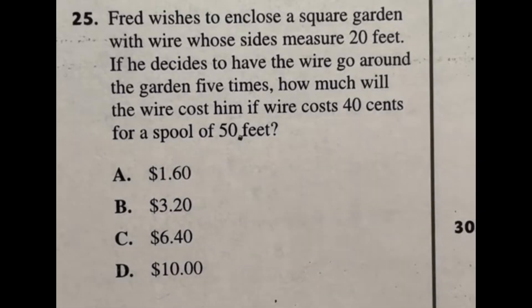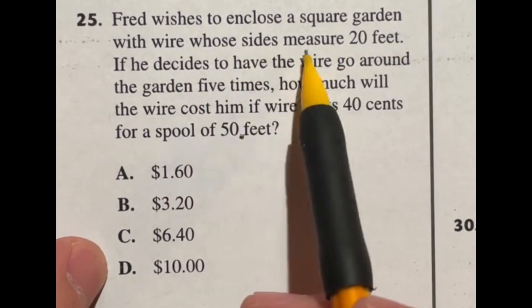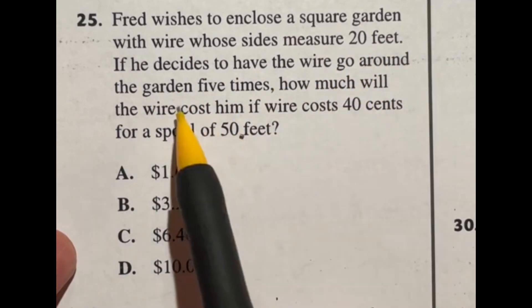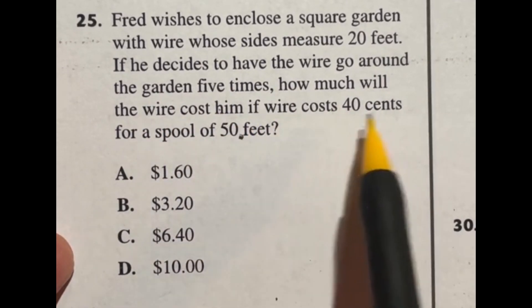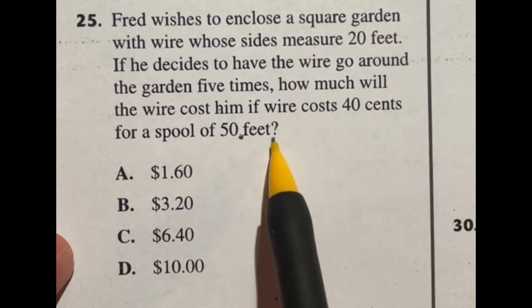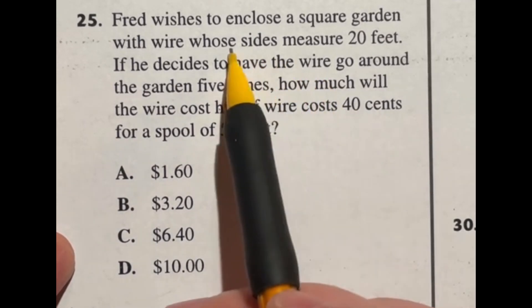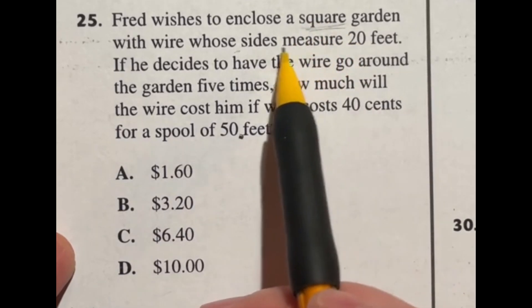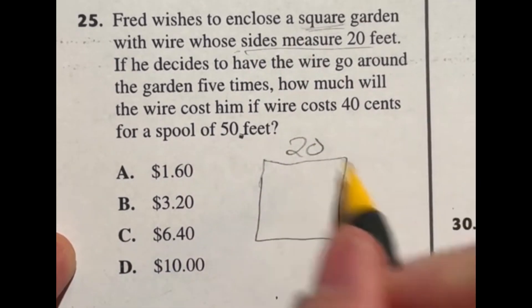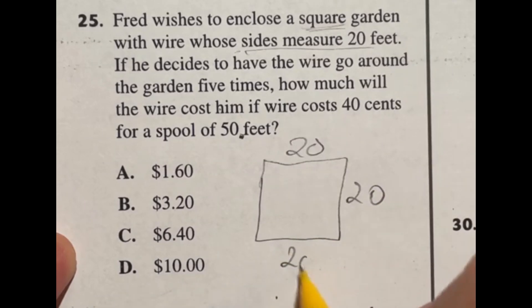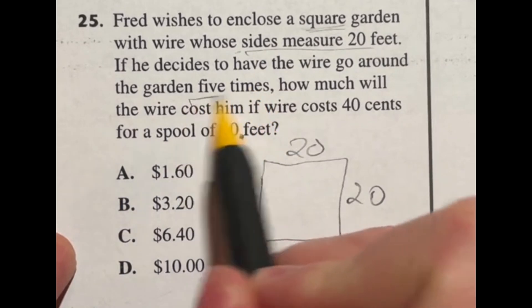Number 25 has quite a bit going on here. It says Fred wishes to enclose a square garden with wire whose sides measure 20 feet. If he decides to have the wire go around the garden five times, how much will the wire cost him if wire costs 40 cents for a spool of 50 feet? First off it's mentioning the fact that this is a square so all the sides are equal and the sides are 20 feet each. So we have a square here, 20 each, and if we're going all the way around the outside that means we got to hit up each one of these sides and we're actually going to go around five times.